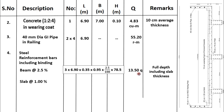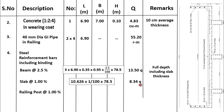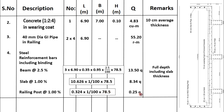Steel reinforcement in slab is 1% of the total quantity. We have already calculated the volume of slab as 10.626 cubic metres. Multiplying by 1% and by 78.5 (density of mild steel), we get 8.34 quintal. The quantity of steel in slab is therefore 8.34 quintal. We will also calculate quantity of steel for railing posts, where the steel percentage is also 1%. Using the same method — volume of concrete for railing posts × 1% × 78.5 — we get 0.25 quintal. The total quantity of steel reinforcement required for this bridge, obtained by adding all three quantities, is 22.09 quintal.